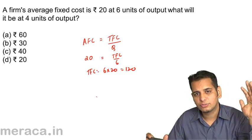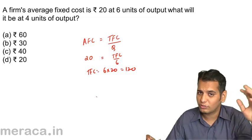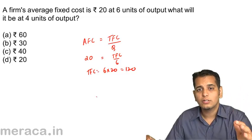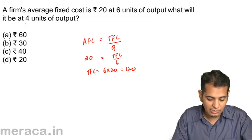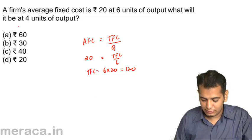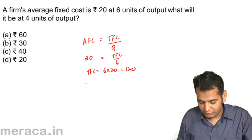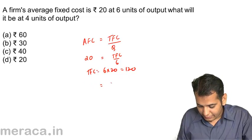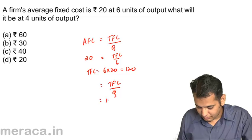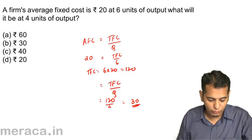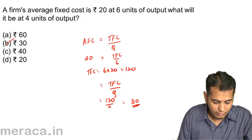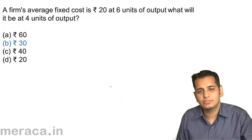Whatever be the level of production — 2 units, 4 units, 6 or 10 — the total fixed cost will always remain constant. We are asked average fixed cost at 4 units: TFC upon Q, where TFC remains 120 and Q is 4. Therefore the answer is 30. 120 divided by 4 is 30.